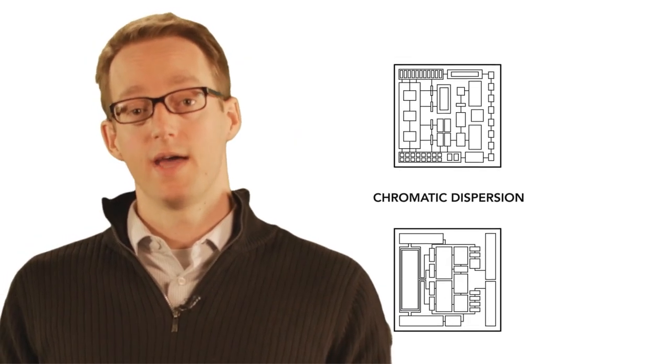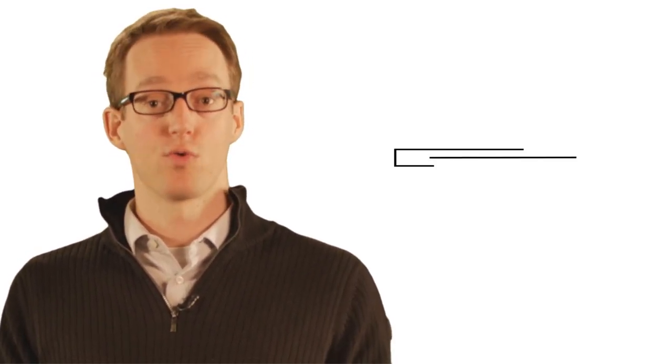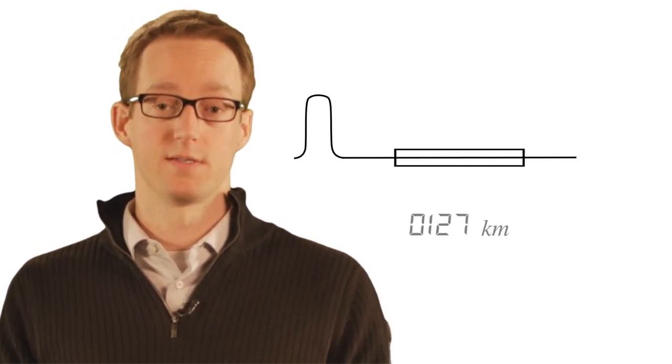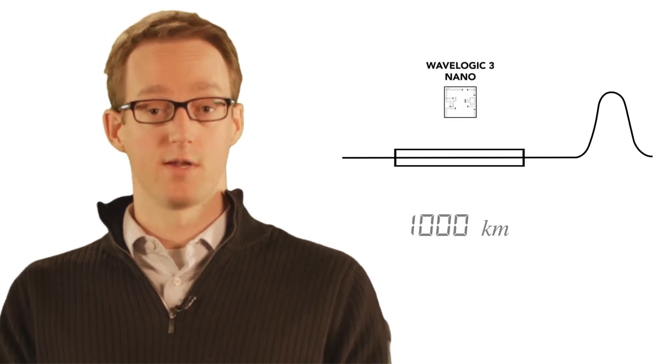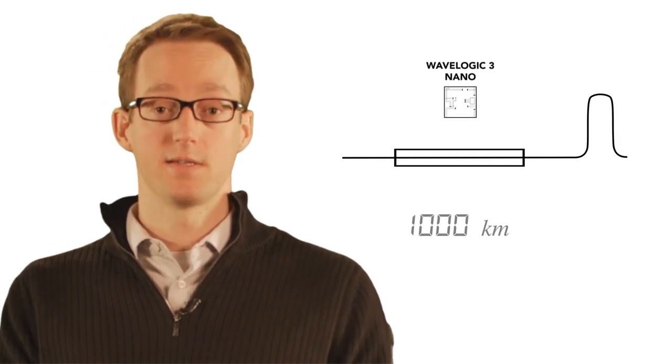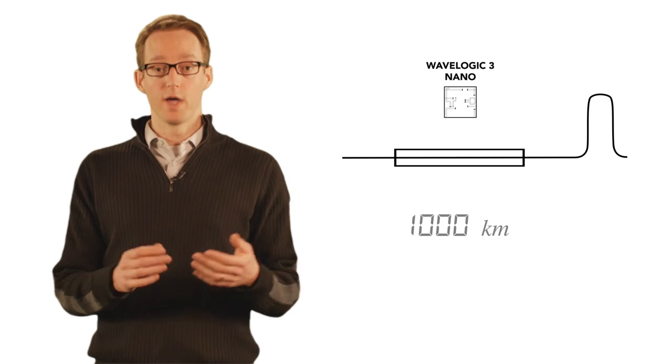We also tailored the chromatic dispersion compensation capability of the WaveLogic 3 Nano ASIC to metro and regional distances. This is important to reduce the number of logic gates in the integrated circuit and reduce the power consumption.